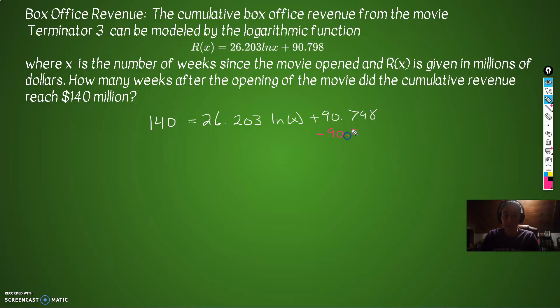We want to get to the ln. 140 minus 90.798. All right, 26.203 times ln(x) will be on the right now. 140 minus 90.798 on the left, 49.2. Now, let's get rid of the 26.203.